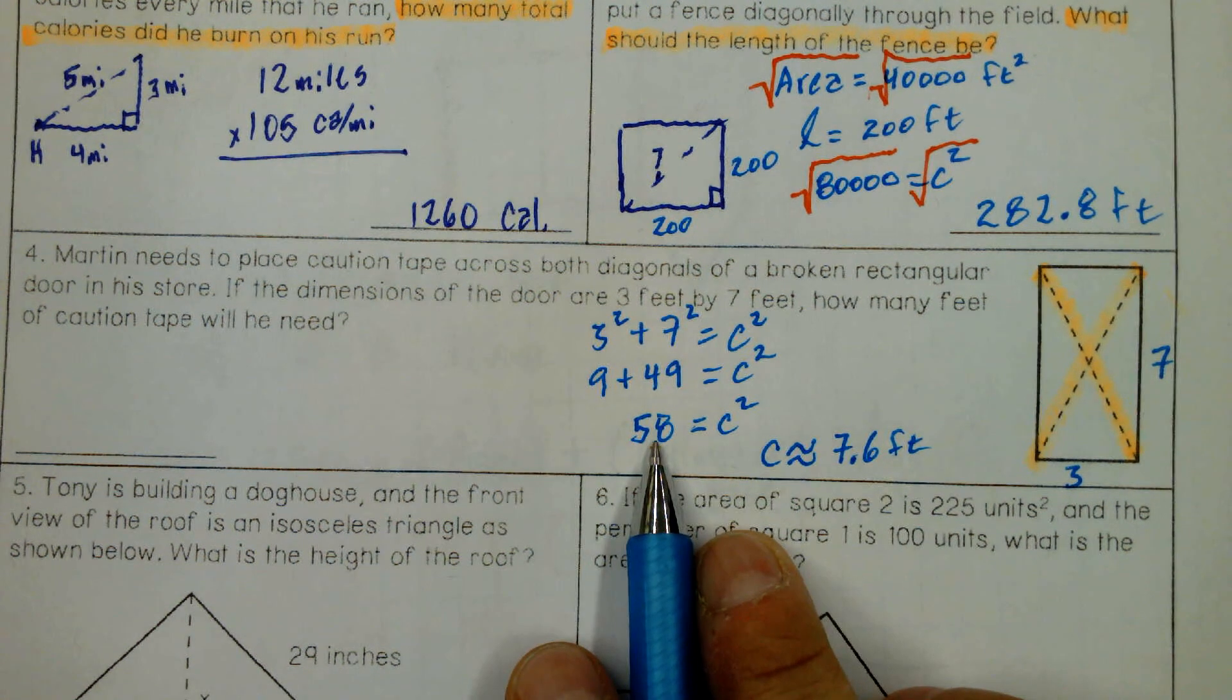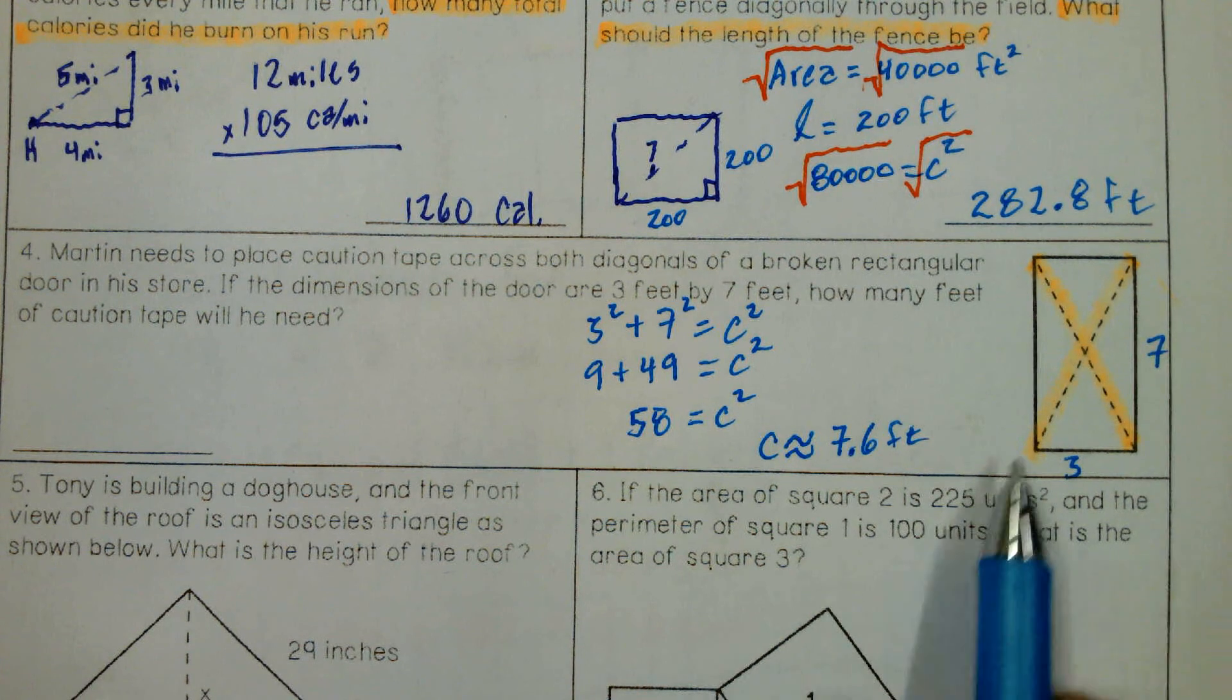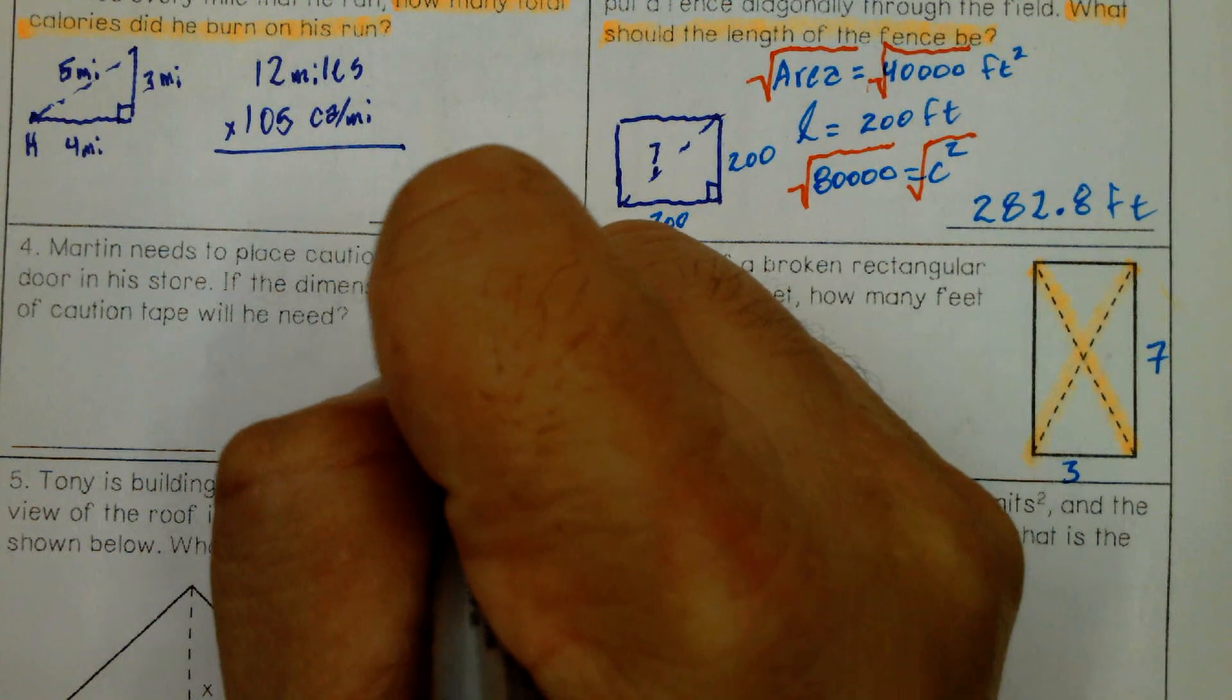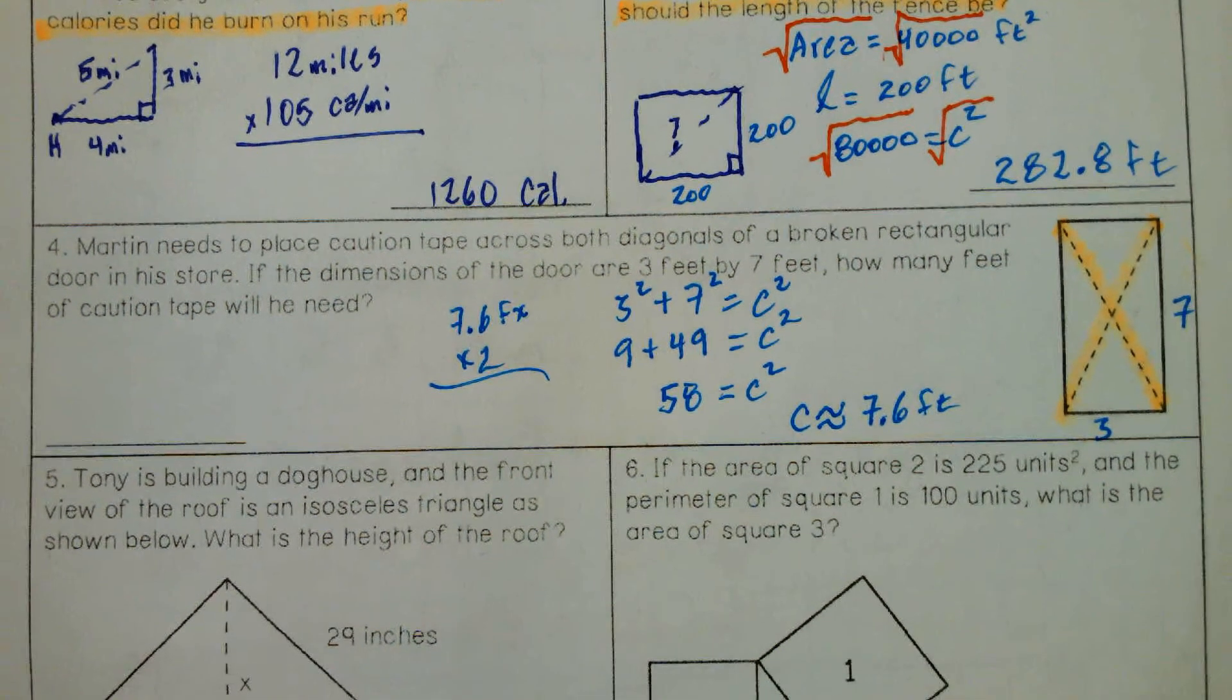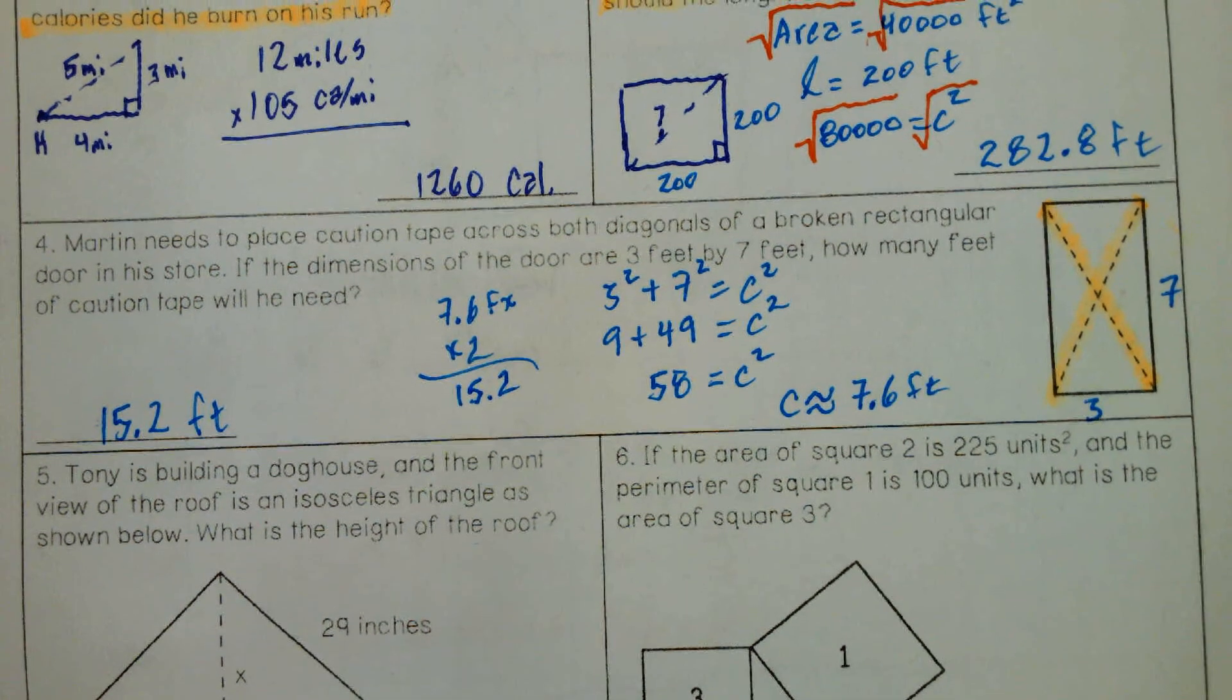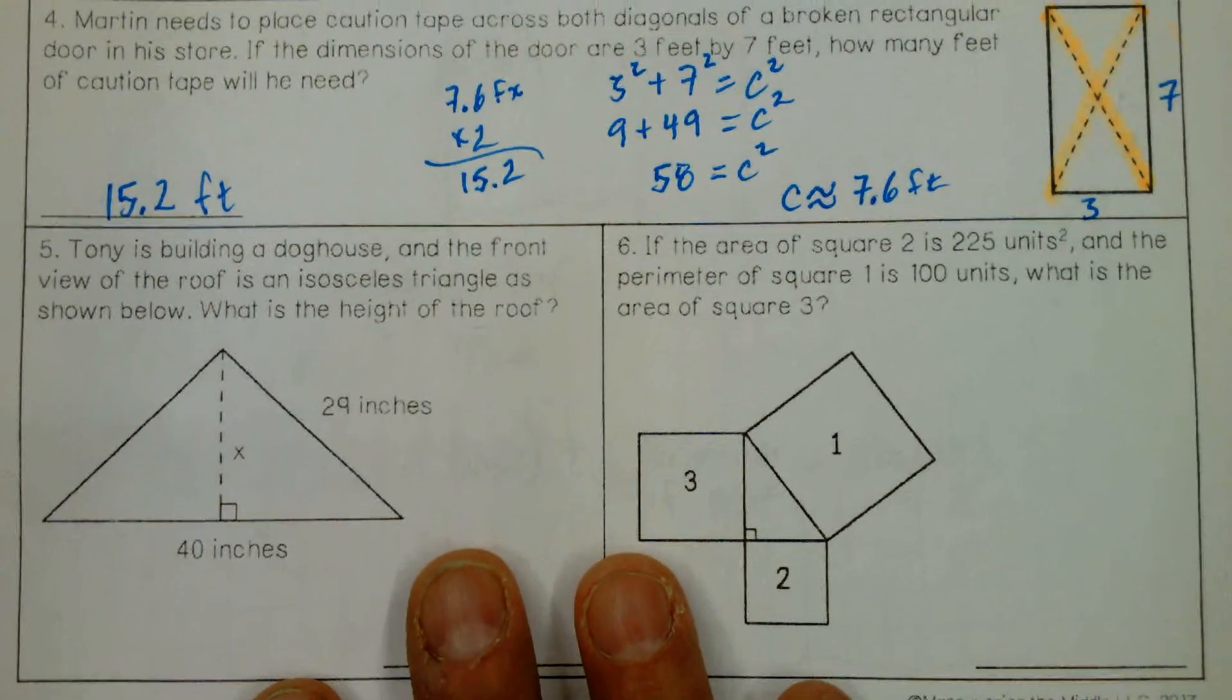Square root 58. Add what? Well, what is 7.6? What does it represent? Think about what it represents. Yeah, it represents one of these diagonals. But you made a cross with the caution tape, so we want twice that. So we want 7.6 feet times 2. 15. 15.2. Yeah, because you have two crosses through that.